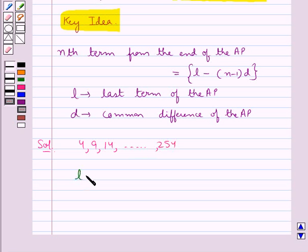So here the last term L is 254. The common difference d is equal to 9 minus 4 which is equal to 5.